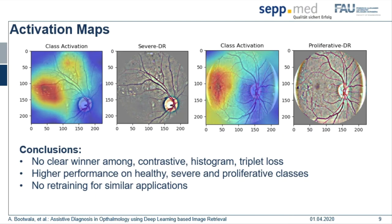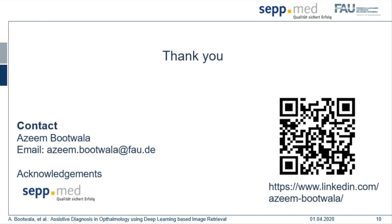In conclusion, there is no clear winner between the three losses; however, contrastive and histogram loss perform a little bit better. We show that the trained network can be repurposed for a different task, provided the image domain remains the same. If you have any questions, please refer to our publication or contact me via email. Thank you all for listening and have a nice day.